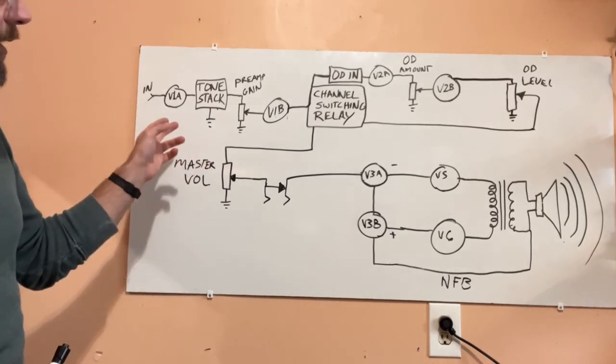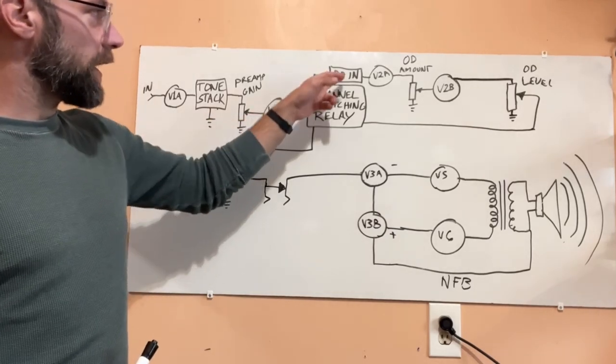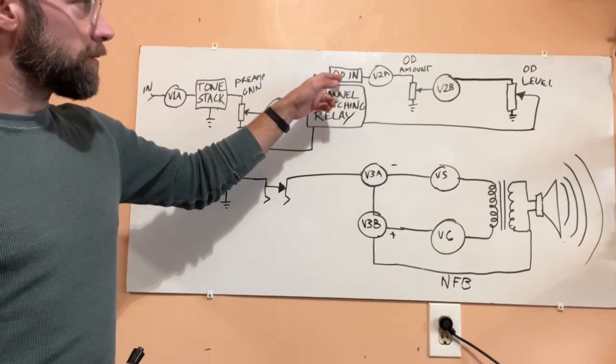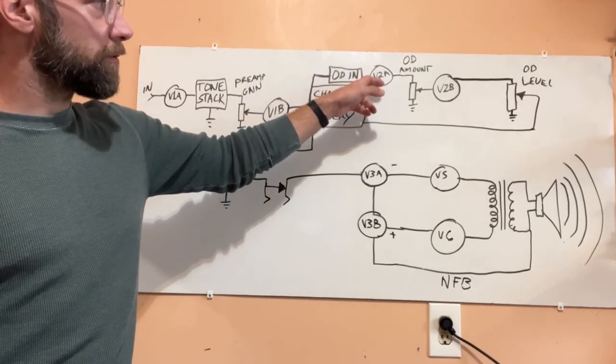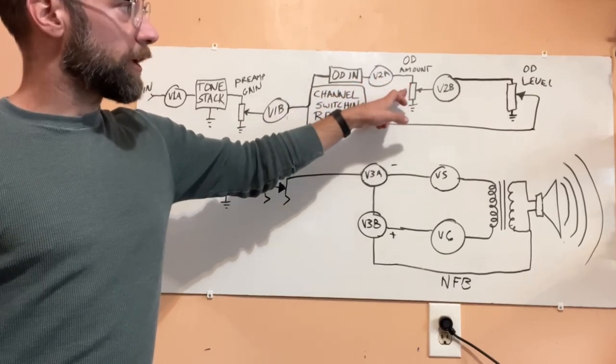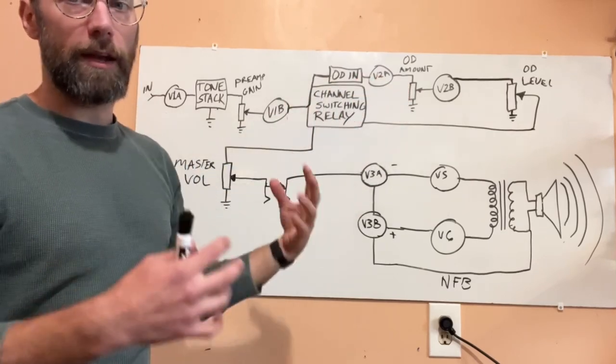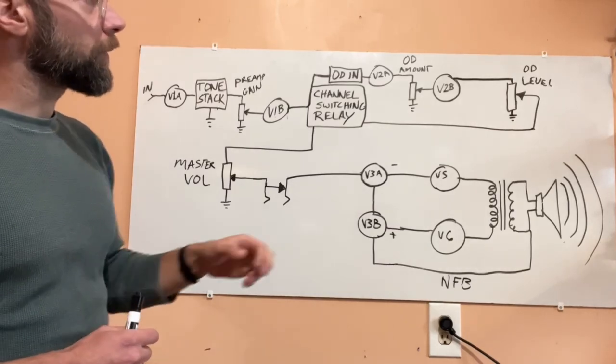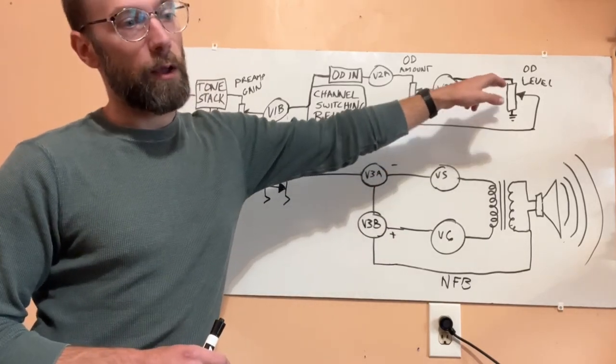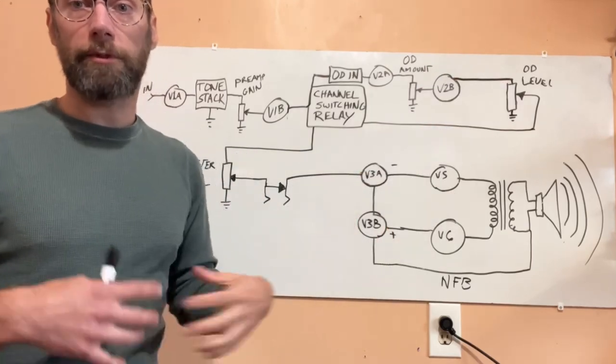So when the overdrive is engaged, your clean signal is coming out, hitting this pre-overdrive filter section and then your first overdrive tube stage. This is your gain control, so how much gain and saturation you're getting out of the overdrive channel. And then the overdrive level is like the overdrive master and in his amps it was sometimes called ratio.